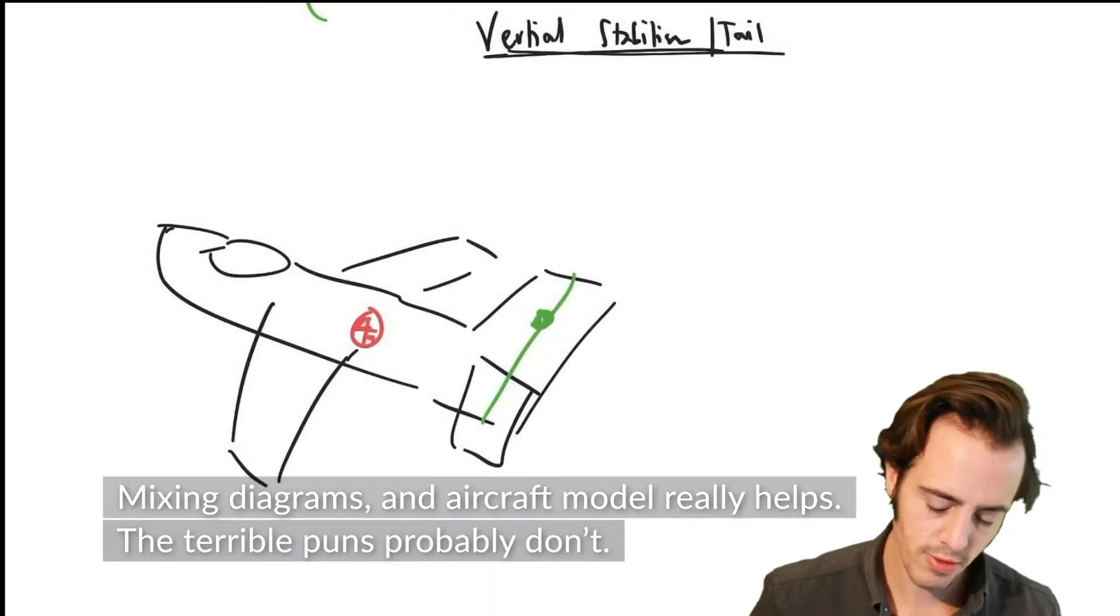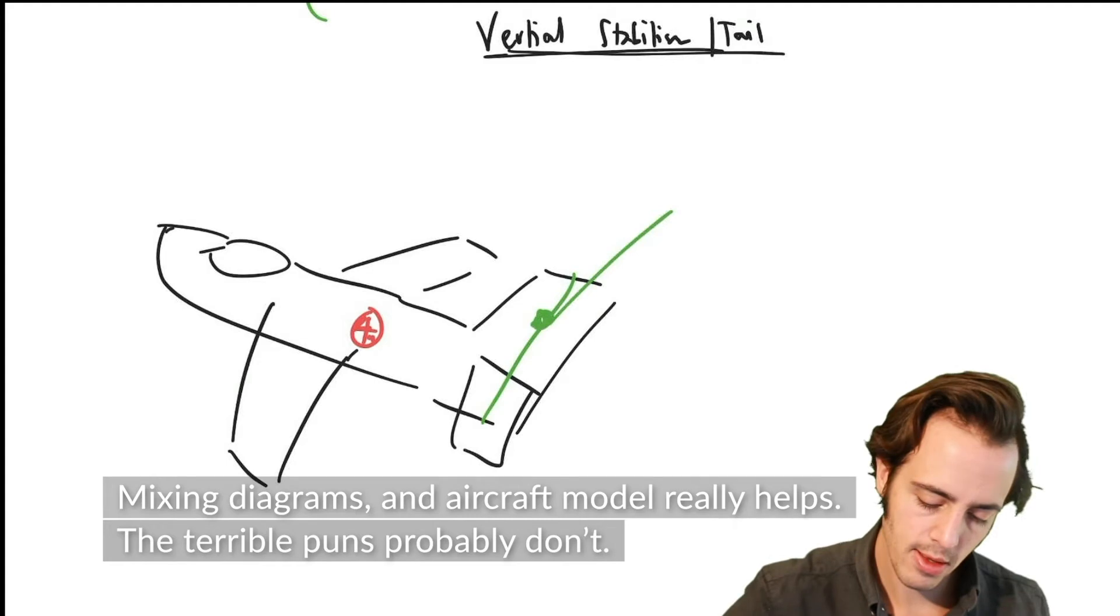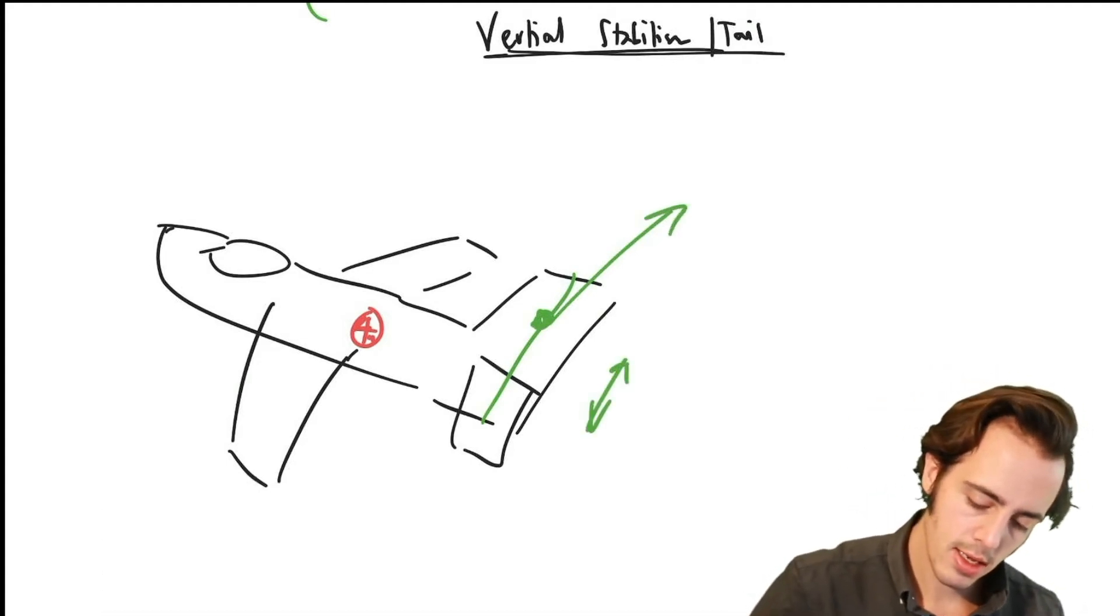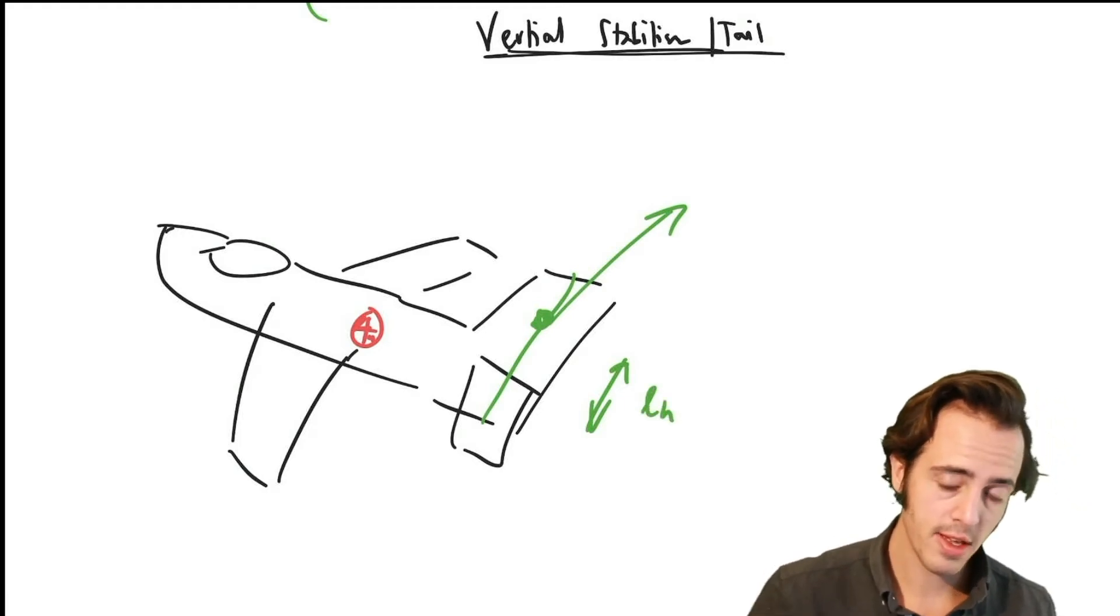The vertical centre of pressure, or the vertical aerodynamic centre, is going to be located some distance above the centre of gravity, so we'll call this LH, because it's located a positive distance above the centre of gravity.